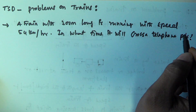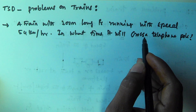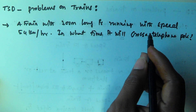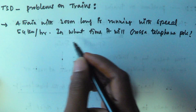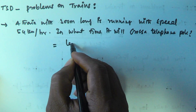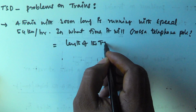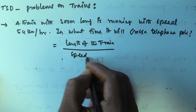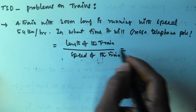As I told you in the previous video, if a train is crossing a telephone pole, signal post, standing man, or a tree, then the time to cross that object is given by the length of the train divided by the speed of the train.